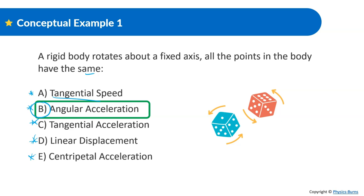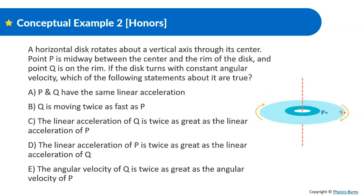Whether you're on the outside, inside, or middle of a rotating body, what's happening angularly — the theta, the angular displacement, angular velocity, and angular acceleration — they're all going to be the same throughout the whole body.